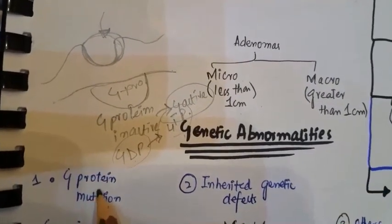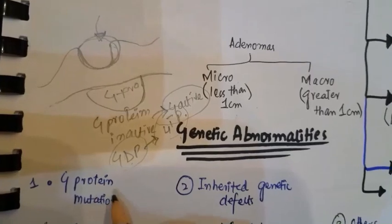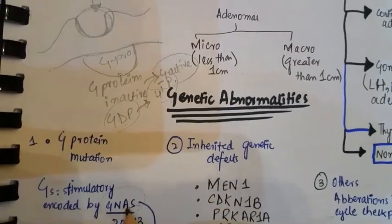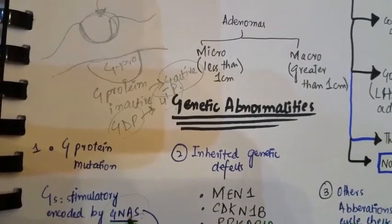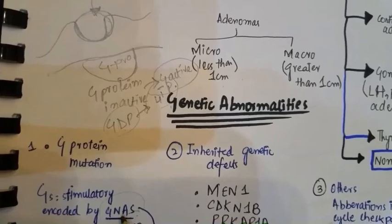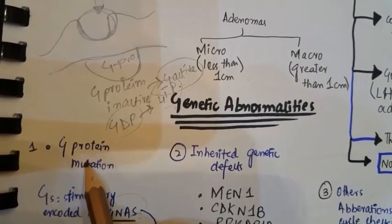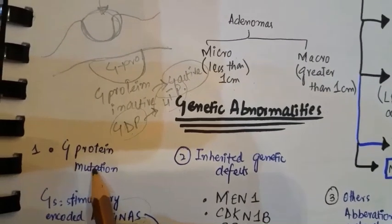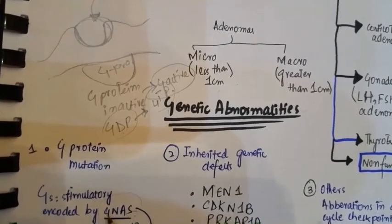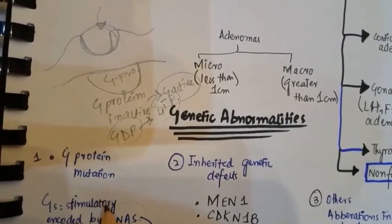There are genetic abnormalities in pituitary adenomas, including G protein mutation. When there is a mutation in the gene encoding the G protein, what happens? If there is a mutation in the gene or the G protein itself, it affects the signaling cascade.